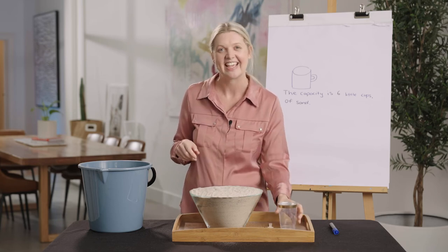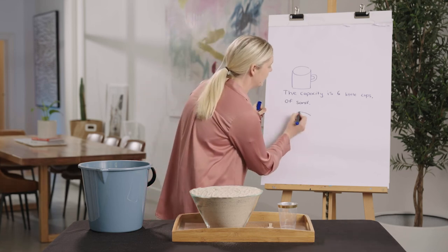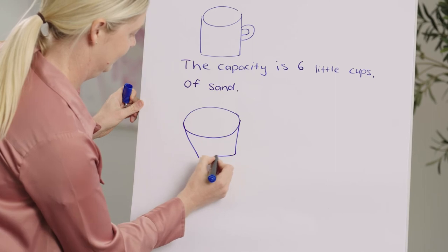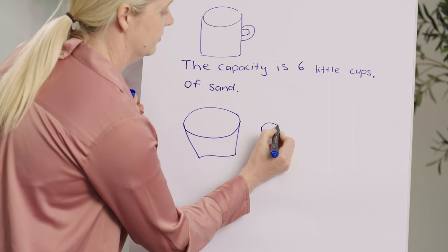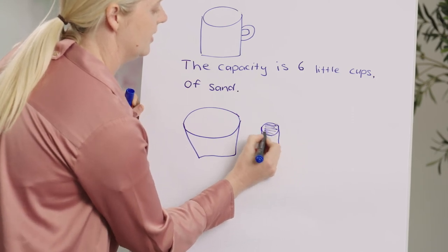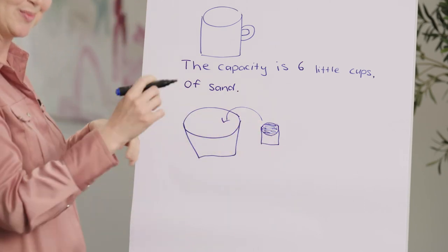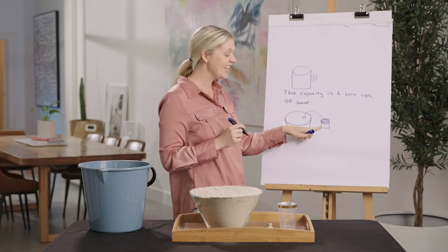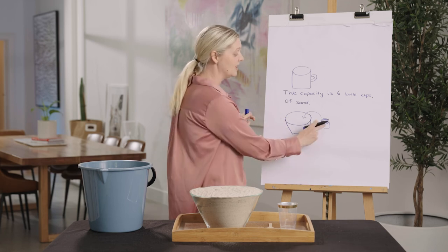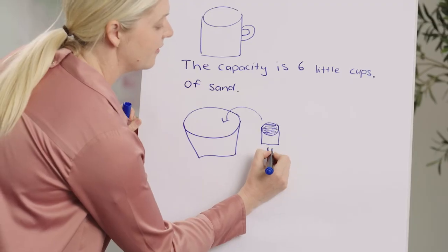Well done. Great counting. Now when I record it this time, I'd like to do it in another way. I'm going to draw the salad bowl and my cup, and this will be the sand. Here's an arrow to show that I scooped, made it level, poured it into the salad bowl, and it was fifteen — that was my total. It took fifteen cups to fill the salad bowl, so I'm going to write fifteen.